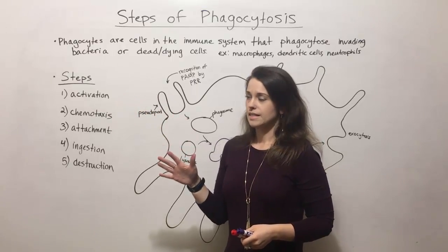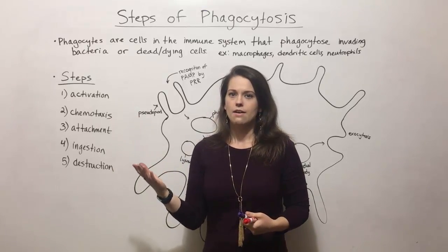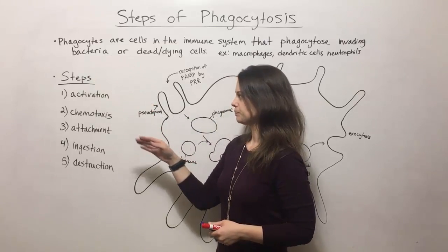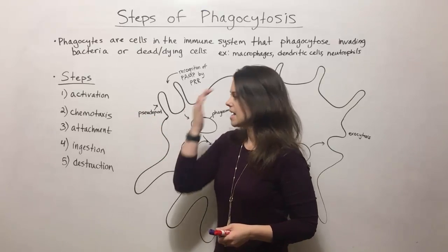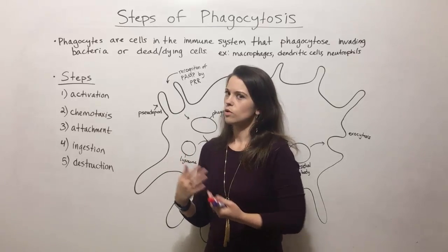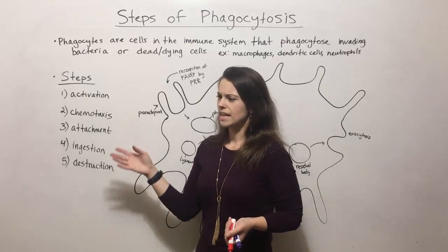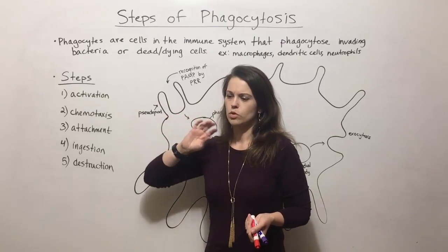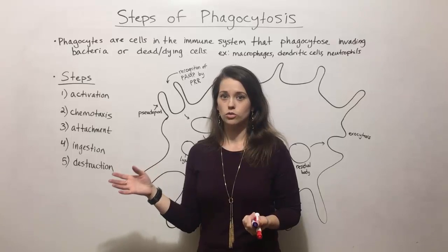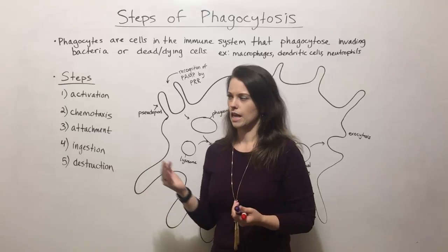Phagocytosis has five basic steps. First, the phagocyte has to be activated — it has to be alerted that there is either an invading pathogen or some dead cells that it needs to clean up. Then it performs chemotaxis. Chemotaxis means it receives a chemical signal that tells it to move in a certain direction, following a gradient of chemicals up toward the area where that chemical is in greater concentration.